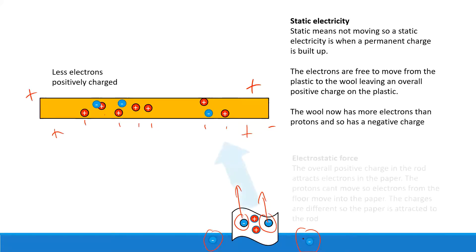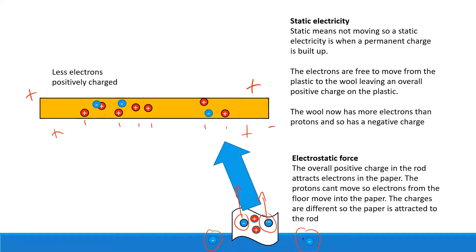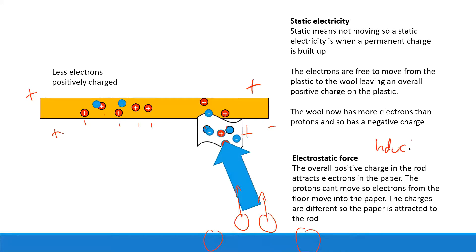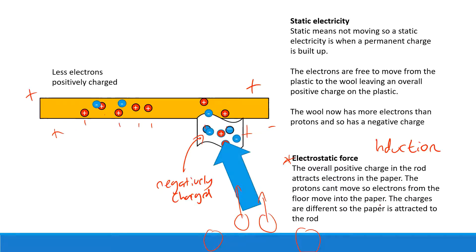This is an example of static electricity. Static means not moving — the charge is built up and stays on the rod. Electrons are free to move from the plastic to the wool, leaving an overall positive charge on the plastic. The wool now has more electrons than protons, so it has a negative charge. We've all experienced static electricity — accidentally touching a doorknob after rubbing our feet on carpet and getting a shock.